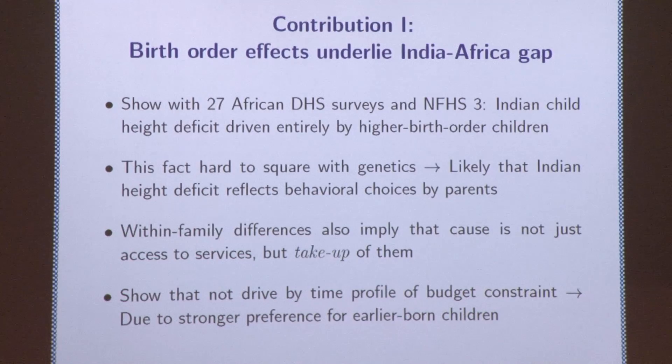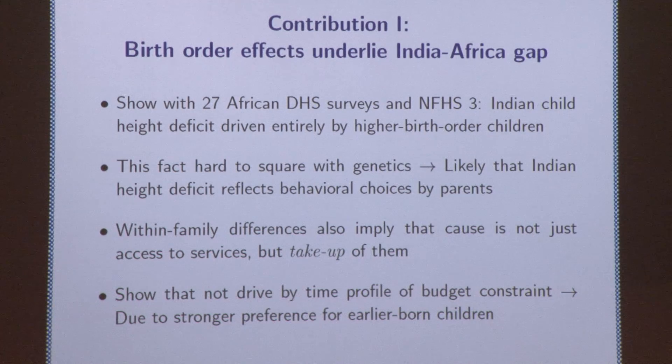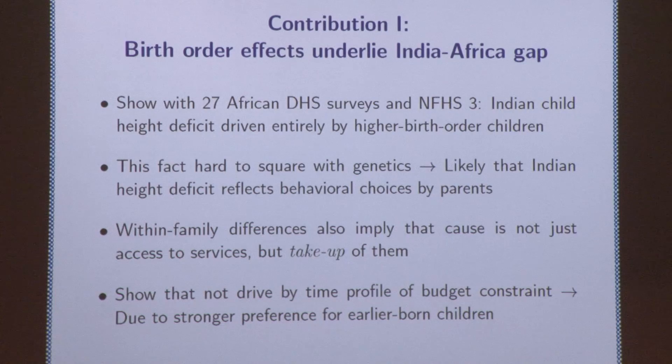Access to services can vary over a couple's life but probably doesn't change that dramatically. I'm going to show direct evidence of take-up also having this birth order gradient. Birth order gradients exist everywhere — there's evidence from Sweden and Norway of IQ gradients and education inputs where first-born kids get more. Historically in Europe, you also saw height gradients by birth order. We see them in Africa too. The fact is they're just stronger in India than in other settings, and specifically stronger than in Africa. That's the puzzle — what is the cause of the Indian height gap?